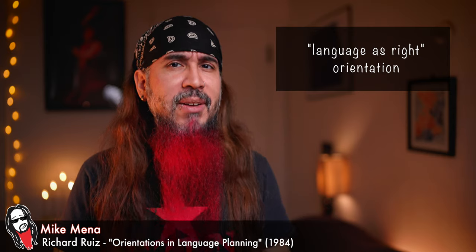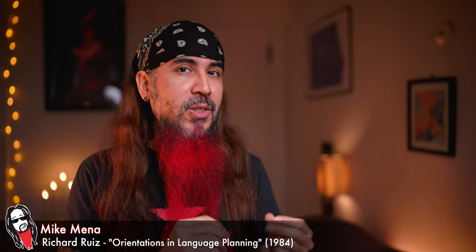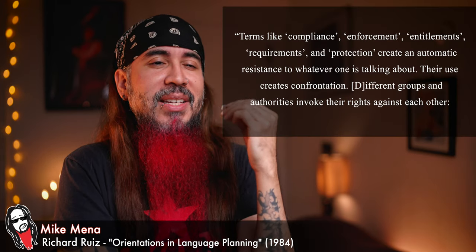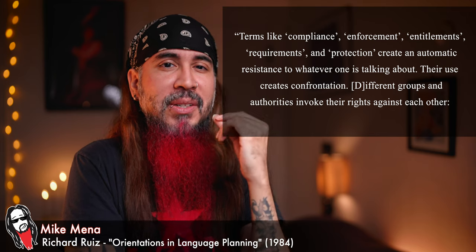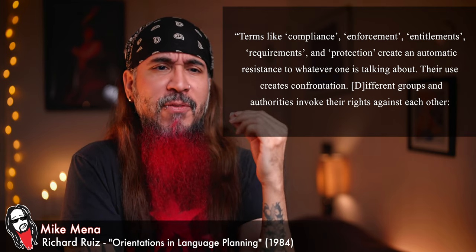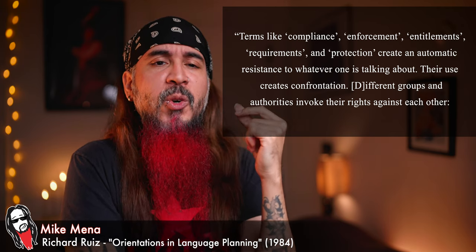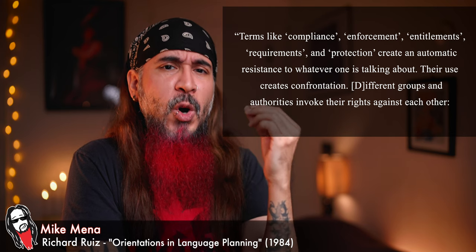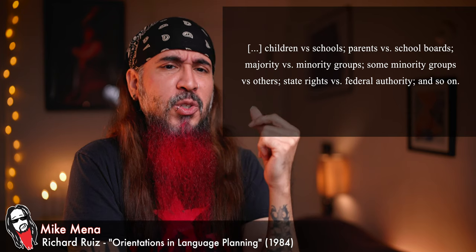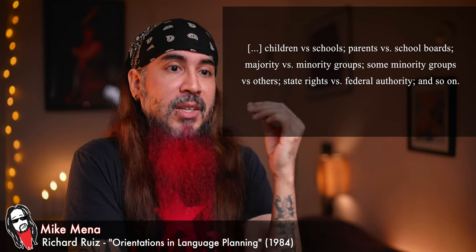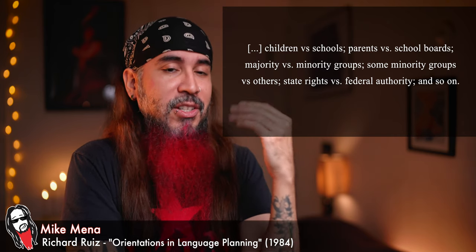However, as Ruiz pointed out, when we codify a law that's about linguistic practice, confrontations will emerge. Terms like compliance, enforcement, entitlement, requirements, and protection create an automatic resistance to whatever one is talking about. Their use creates confrontation. Different groups and authorities invoke their rights against each other: children versus schools, parents versus school boards, majority versus minority groups, some minority groups versus others, states' rights versus federal authority, and so on.